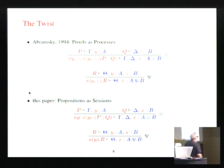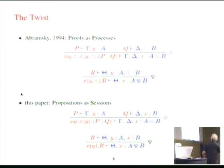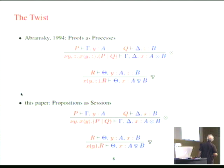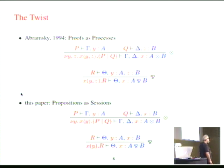So the key thing is the twist. And the twist was the change to what Abramsky had done back in 1994. Here were Abramsky's two rules for the connectives tensor and par. They're both kinds of pairing. What we're going to do for tensor is output a Y-Z pair along channel X. And for par, what we're going to do is input a Y-Z pair along channel X. Here was the clever twist that Caires and Pfenning came up with: now it's not a pair.